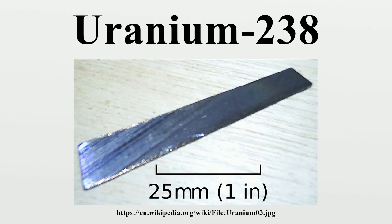Thorium-234 has a mean lifetime of 3×10⁶ seconds, so there is equilibrium if 1 mole of U-238 contains 9×10¹² atoms of thorium-234, which is 1.5×10⁻¹¹ mole. Similarly, in an equilibrium in a closed system, the amount of each decay product, except the end product lead, is proportional to its half-life.